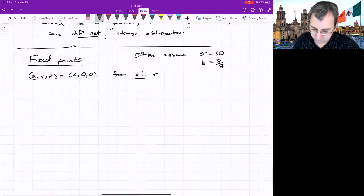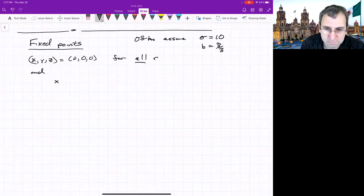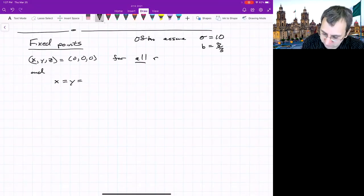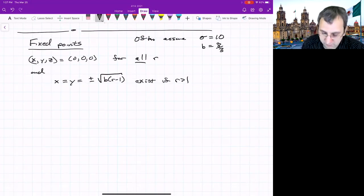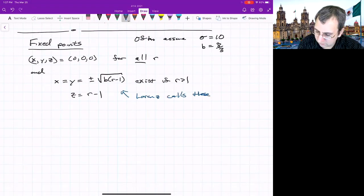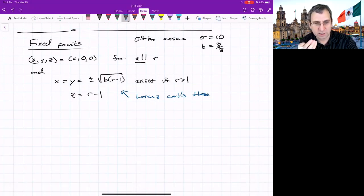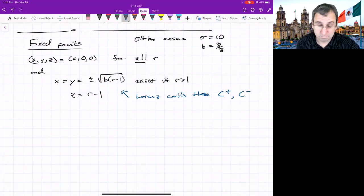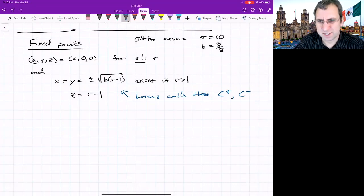There's other fixed points too. And we could get that just by analyzing it. I'll just tell you what it is. There's x and y equals plus or minus square root B(R minus 1), which only exists if R is greater than 1, and z is R minus 1. Lorenz gave these a name. He called these fixed points that were not the origin C plus and C minus. C for convection, and maybe C plus meant that it was convection in some positive sense, and then the other was convection in some negative sense, maybe clockwise and counterclockwise.